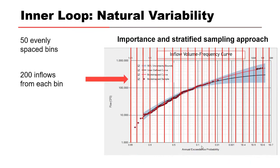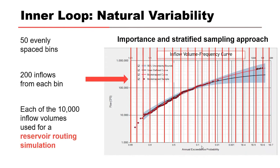Each of the 10,000 peak stages is sorted and ranked, and one possible stage frequency curve is generated. The stage frequency curves from all the realizations are used to compute the confidence intervals. This approach allows for very fast computing and provides well-defined curves, especially in the less frequent end of the AEP scale.